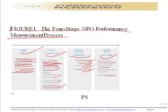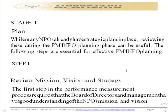Stage four is the review and assess stage, where we manage the balanced scorecard, evaluate results against targets, examine outcomes, and adjust where necessary. These are the key steps to follow when evaluating how a non-profit organization is faring in terms of performance.